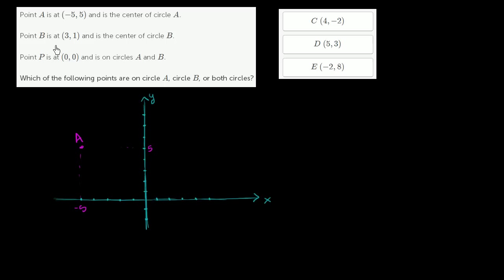Point B is at 3 comma 1. So 3 comma 1 — that's point B right over there. It's the center of circle B. Point P is at 0, 0, so it's right over there at the origin.